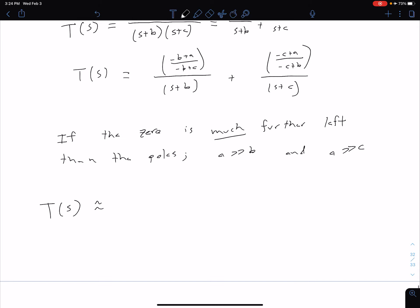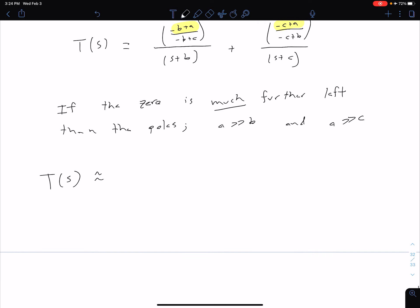So if that's true, then what we can say is that this T(s) is approximately, so these terms in the numerator here, so this negative B plus A, well, if A is much bigger than B, that's approximately just A. Same thing here, if A is much greater than C, that term highlighted is approximately just A as well. So what we can do is we can factor out an A, and then in this first term, we just have 1 over negative B plus C divided by s plus B. And in our second term, we factored out that A, so we're left with negative 1 over C plus B divided by s plus C.